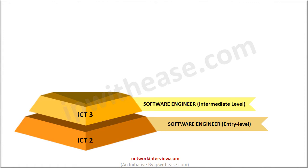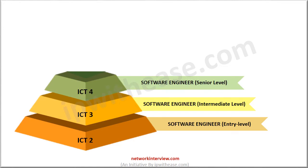After around three to five years of experience in software development and consulting, you will be promoted to ICT4, or senior-level software engineer. This band ranks equal to the senior software engineer position in Google or other companies. The salary of ICT4 varies from person to person based on their work efficiency, with the average base annual salary estimated at $317,000.